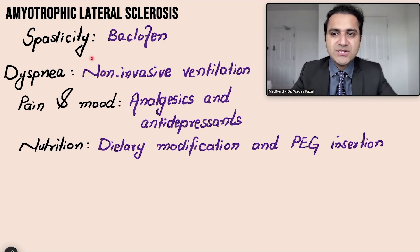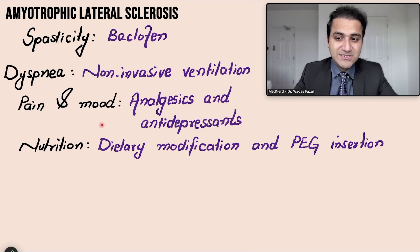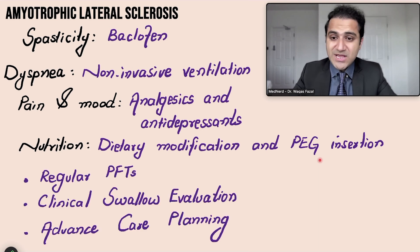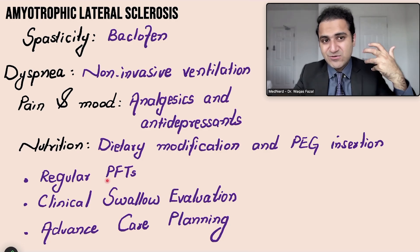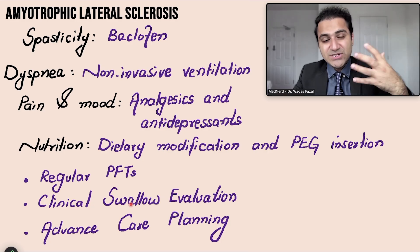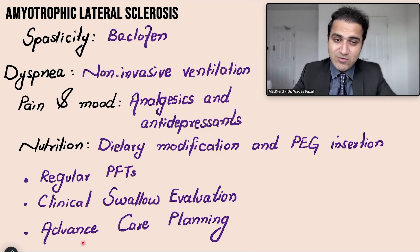It is mainly supportive care where you treat the patient's symptoms. To reduce spasticity, you use baclofen, a muscle relaxant. If the patient develops dyspnea or respiratory failure, non-invasive ventilation is used. For pain management, analgesics are given; for mood, antidepressants. For nutrition, soft diets are given, and in later stages when the patient cannot swallow and is at risk of aspiration, PEG insertion is performed. Regular pulmonary function tests — checking FEV1 — and swallowing evaluations are important, as are advanced care planning discussions.